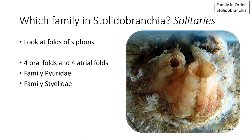Still thinking about the families in the Stolidobranchia: if instead of four and six folds, you have four oral folds and four atrial folds — shown nicely in this Styela placenta on the right — you're dealing with either species in Family Pyridae or in Family Styelidae.